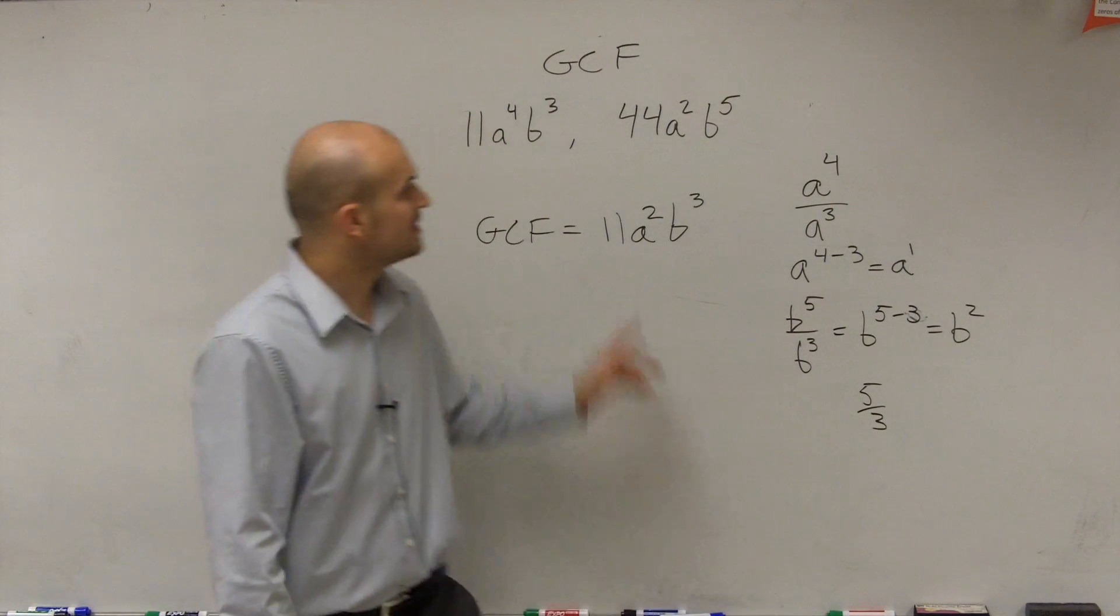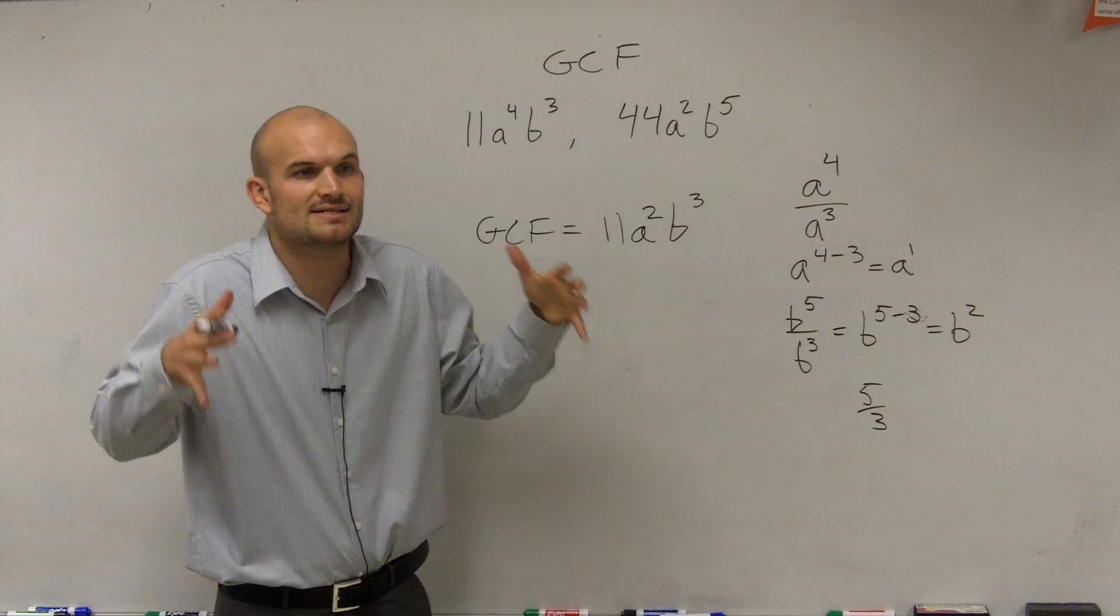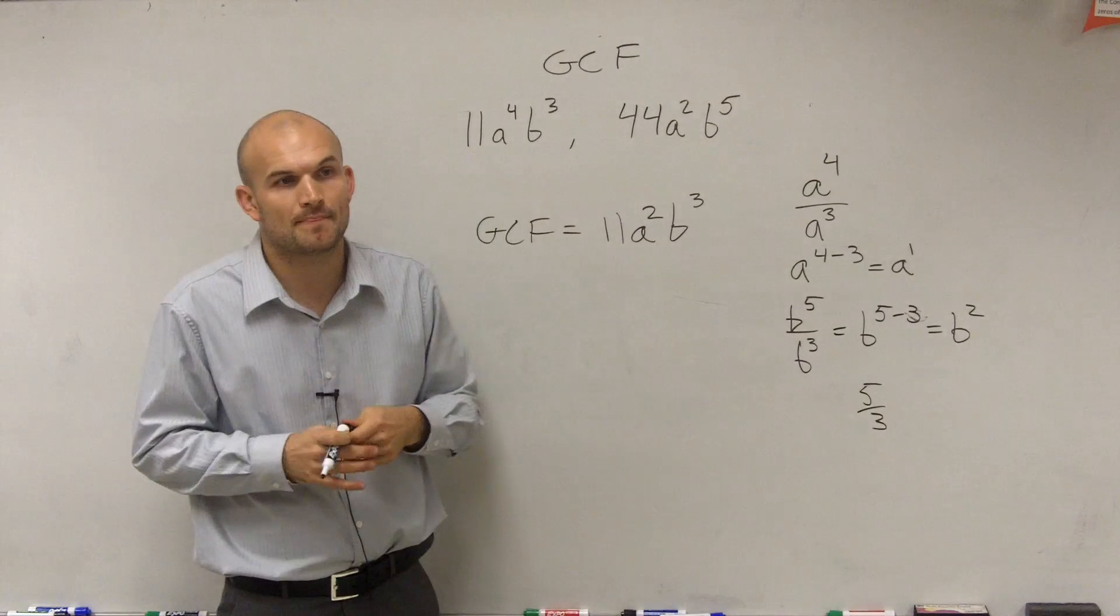So why is the b cubed one? Because b cubed divides into b cubed, and it divides into b fifth. It's the greatest power, variable with the greatest power that goes into both of them, OK?